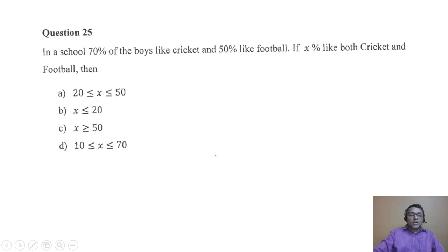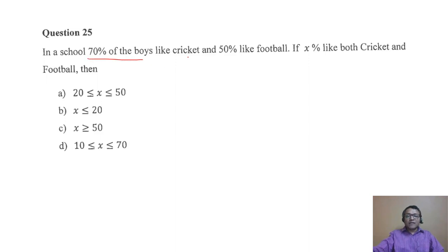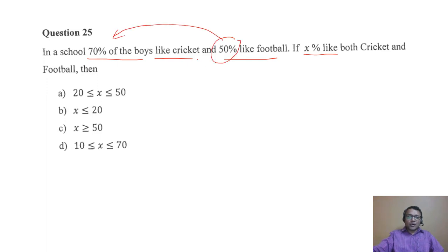Normally a lot of sums can be solved much faster if you look at non-traditional methods. In this problem, in a school 70% of boys like cricket and 50% like football. X percent like both cricket and football. When is X maximum? When all 50% who like football also like cricket — so maximum is 50%. You can directly mark option A as 50%.